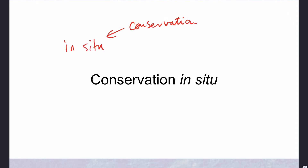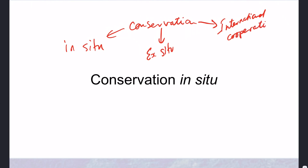First, there's in situ conservation — conservation taking place in the natural habitat of the organism. Then there's ex situ conservation, which means taking the organism out of its habitat and carrying out conservation activities away from that normal natural habitat — we're talking about zoos and wildlife parks. And finally, the last aspect is international cooperation, even including at the national level, local legislation — local laws that promote and allow conservation. So these are the three main branches.